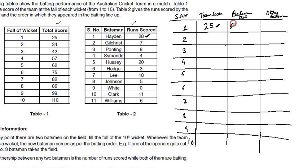So Gilchrist was out at the score of 7. If Gilchrist scored 7 runs, it means for the first wicket partnership, Hayden scored 18 runs. Because the first wicket fell at the score of 25, Hayden must have scored 18 runs and Gilchrist scored 7 runs.